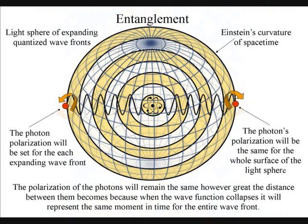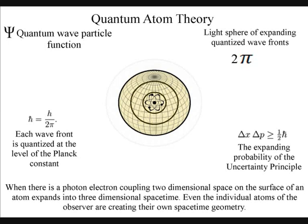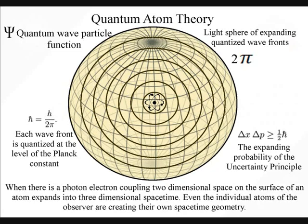We have entanglement, because the polarization will be set at the creation of each expanding wave-front. The wave-front will expand in the form of a light sphere, and the polarization will remain the same for the entire surface of the light sphere, no matter how large it becomes.